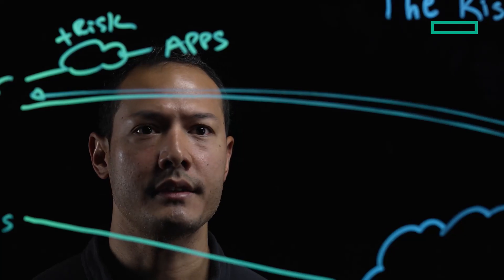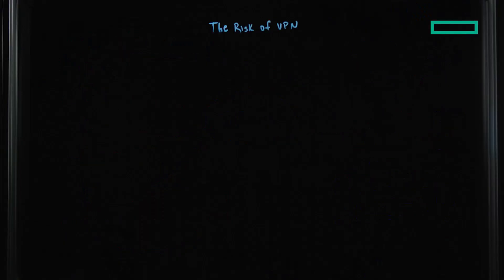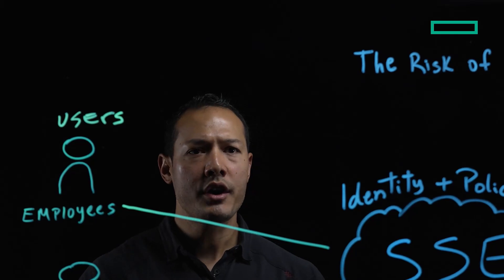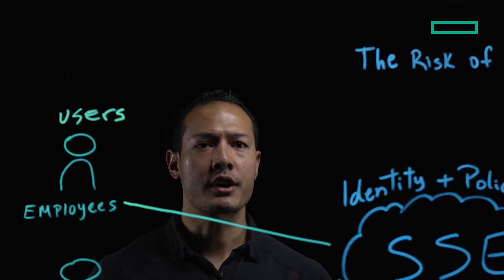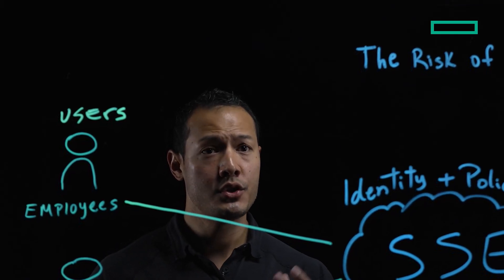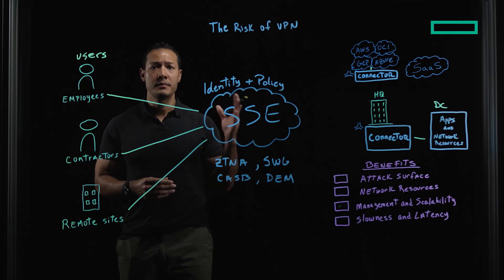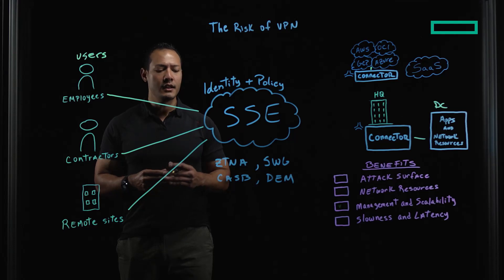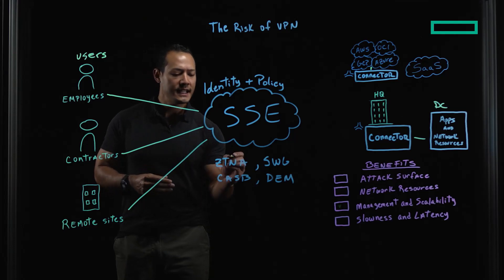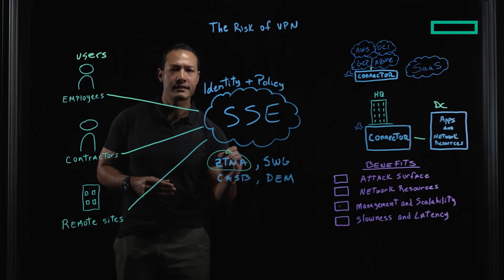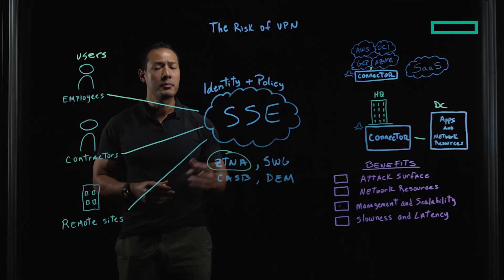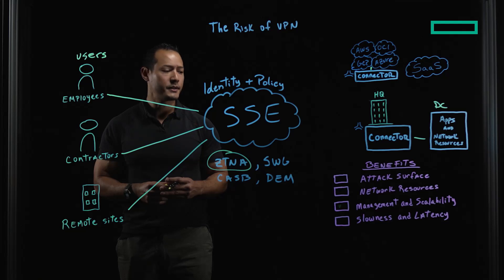What if there's a better way? So how is HPE Aruba Networking helping you overcome many of these VPN risks? Our ZTNA is an elegant solution to replace VPN. Our ZTNA zero-trust network access not only helps you improve the user experience, but minimizes cybersecurity risk.